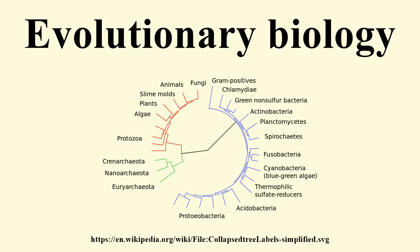Other journals combine aspects of evolutionary biology with other related fields; for example, Molecular Ecology, Proceedings of the Royal Society of London Series B, The American Naturalist, and Theoretical Population Biology have overlap with ecology and other aspects of organismal biology. Overlap with ecology is also prominent in the review journals Trends in Ecology and Evolution and Annual Review of Ecology, Evolution, and Systematics. The journals Genetics and PLOS Genetics overlap with molecular genetics questions that are not obviously evolutionary in nature.